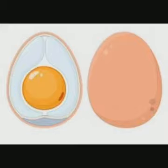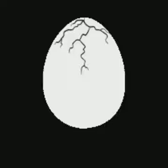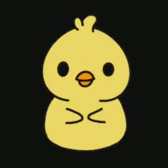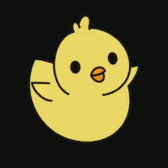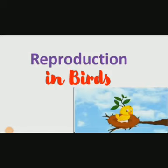The yolk provides food to the growing embryo. The growing embryo grows into a chick and comes out when the egg hatches.